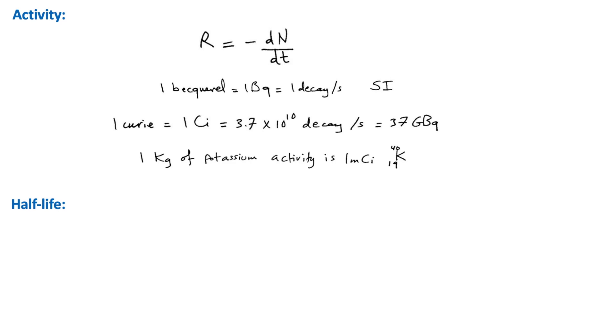As an example, 1 kg of ordinary potassium has an activity of about 1 microcurie, because it contains a small proportion of the radioisotope K-40.